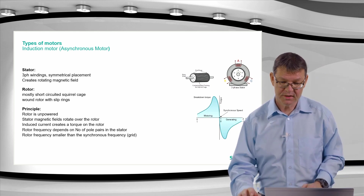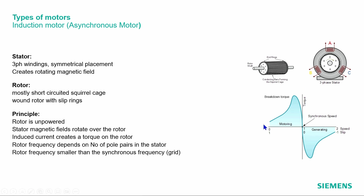Here we see a characteristic of the torque: the y-axis is torque and the x-axis is the rotation speed of the rotor. When the motor is at standstill — zero speed — we get a certain torque, and with increasing rotation speed the torque rises to a maximum value, called the breakdown torque, then decreases to the synchronous speed point. Normally we do not reach that speed because the rotor needs power to compensate its own losses and to drive the connected machine.